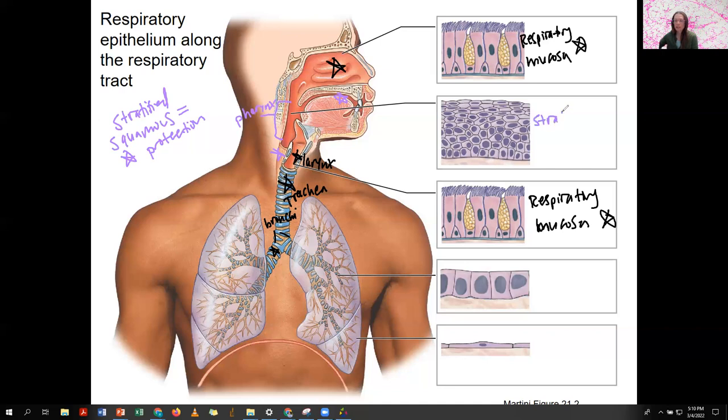Those are the protective layers that can regenerate quickly and produce new cells like your skin. The oropharynx and the laryngopharynx are both stratified squamous. The nasopharynx is up here. Food doesn't go through there.